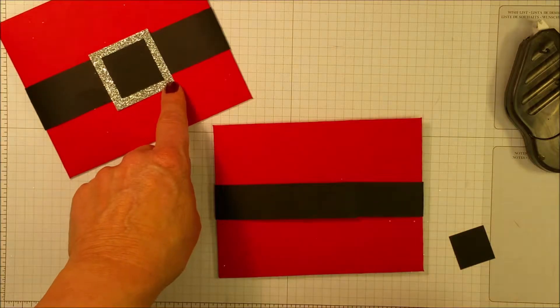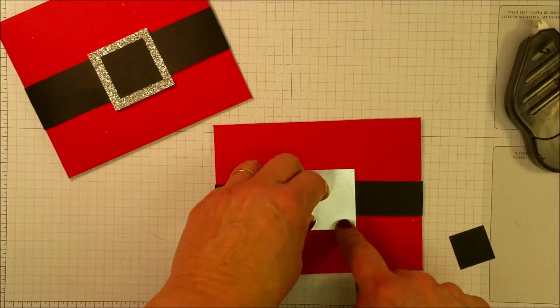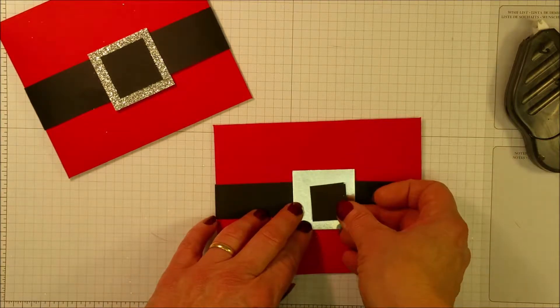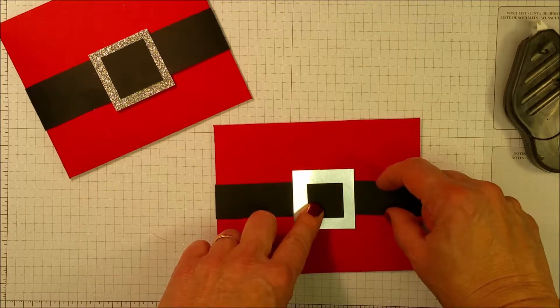So this one was made with silver glimmer paper. This one was made with just plain silver paper. It looks equally cute either way. The key is that the inside piece that you put in is the same height as the buckle, or as the belt.